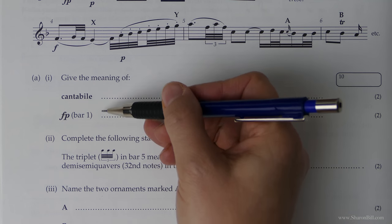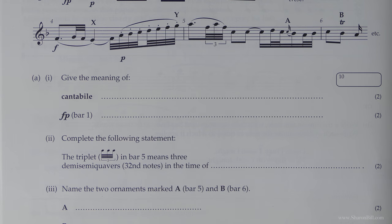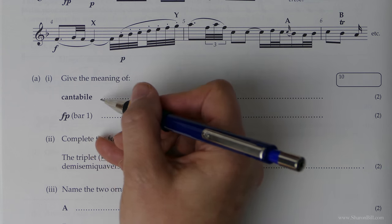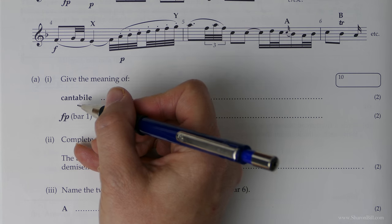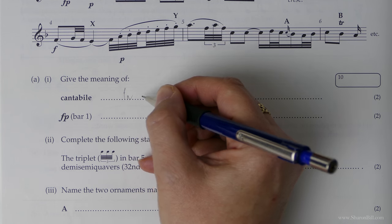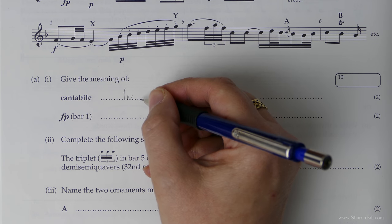These will be presented in multiple choice. But it's good to go ahead and answer these. It's a good revision exercise. So Cantabile, this first appeared way back in grade 1. And that means in a singing style or in a singing manner.